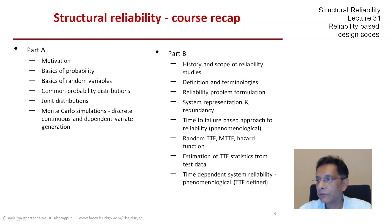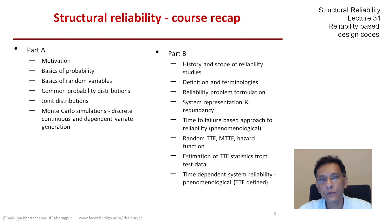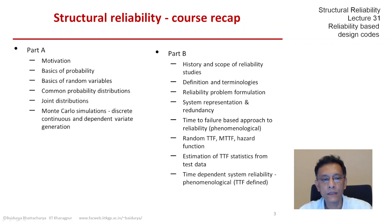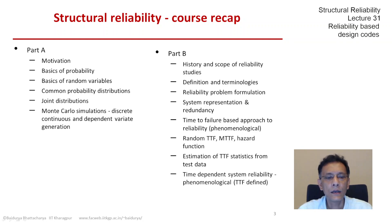The time to failure (TTF) was the only random variable describing the uncertainty in the processes — that is why we called it phenomenological — and we estimated various statistics of the random time to failure, including the mean time to failure, the hazard function, the reliability function, and so on. We also discussed how to estimate these statistics from a test program. We ended Part B with this phenomenological approach for systems reliability.